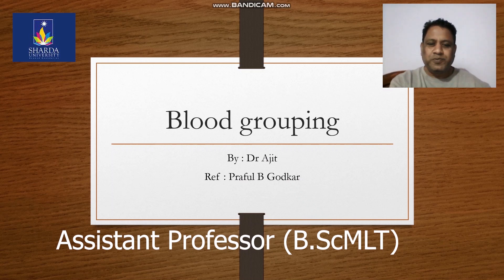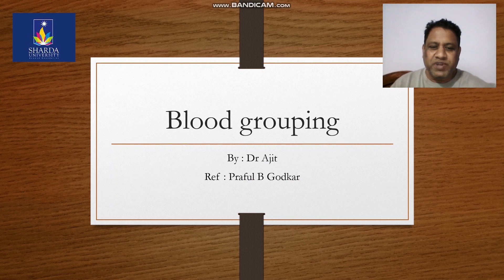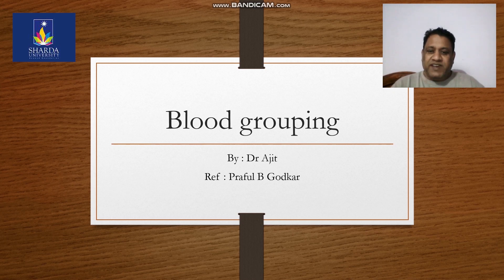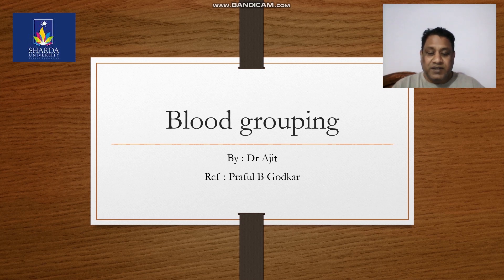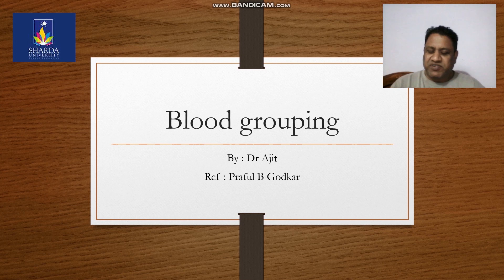Hi, this is Dr. Ajit and today I am going to discuss a very important test which is done in a pathology lab, that is blood grouping. A blood type or blood group is a classification of blood based on the presence and absence of antibodies and inherited antigenic substances on the surface of red blood cells, that is RBCs. These antigens may be proteins, carbohydrates, glycoproteins, or glycolipids depending on the blood group system. In general, it is an antigen-antibody reaction.